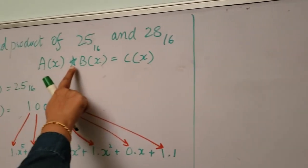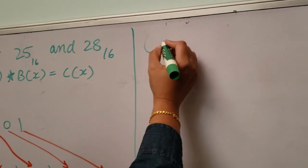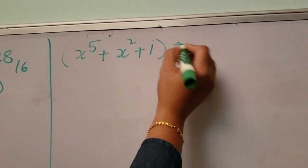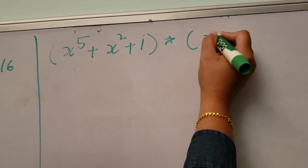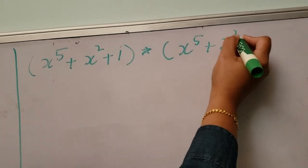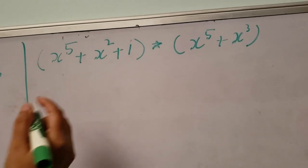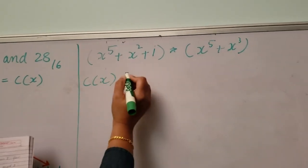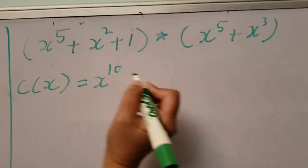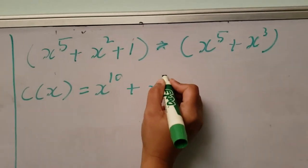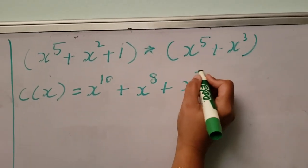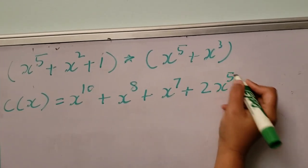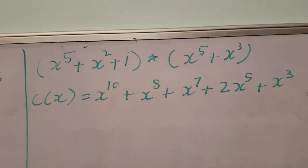Now let's calculate a(x) times b(x), which is (x to the power 5 plus x squared plus 1) times (x to the power 5 plus x cubed). After the multiplication of these two polynomials, c(x) will be x to the power 10 plus x to the power 7 plus 2x to the power 5 plus x to the power 3.